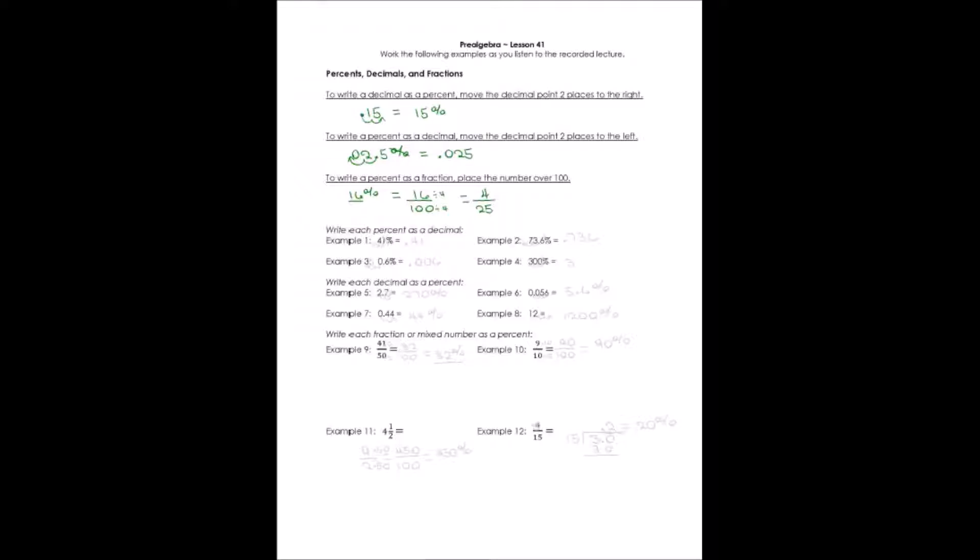Let's see how you did. Example number one is 41%. I want to write it as a decimal. I'm going to take away the percent sign. I'm going to move the decimal point two places to the left. It will be .41. Number two, same thing. When I take away the percent sign, decimal point goes two places to the left, .736.